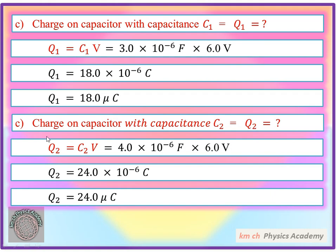دوسرے کے لیے: charge on capacitor C2 کو Q2 رکھتے ہیں۔ Q2 = C2 × V۔ C2 کتنی ہے اور اس کے cross voltage کتنا ہے۔ C2 = 4.0 × 10⁻⁶ F اور V = 6.0 V۔ 4 کو 6 سے multiply کریں تو 24 بن جائے گا۔ تو Q2 = 24.0 × 10⁻⁶ C = 24.0 microcoulomb، دوسرے capacitor پر store ہوگا۔